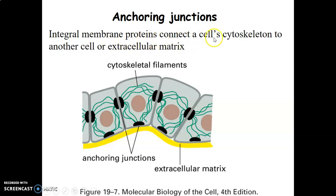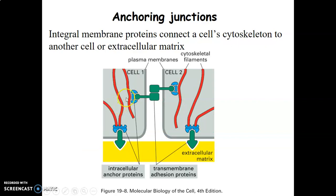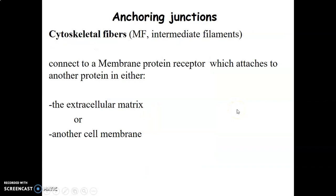In anchoring junctions, integral proteins connect onto the cell cytoskeleton. You have integral proteins that connect the cell onto the cytoskeleton of the adjacent cell, forming anchoring junctions. The integral or transmembrane protein connects to an intracellular anchor protein. Anchoring junctions are linked onto the cytoskeleton — whether myofilaments or intermediate filaments — and connect the membrane protein receptor to another cell or to the extracellular matrix.